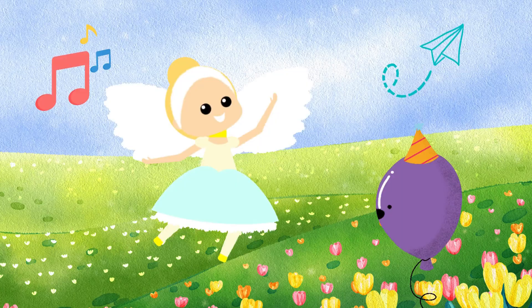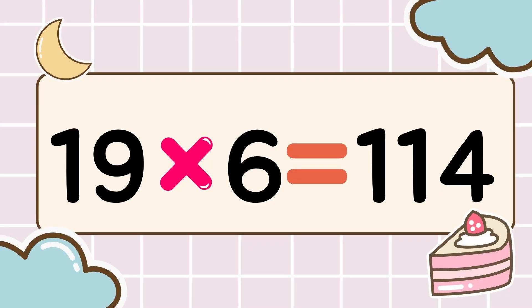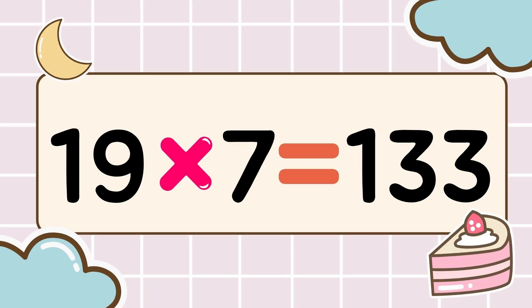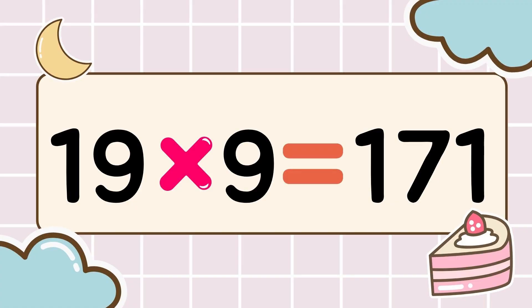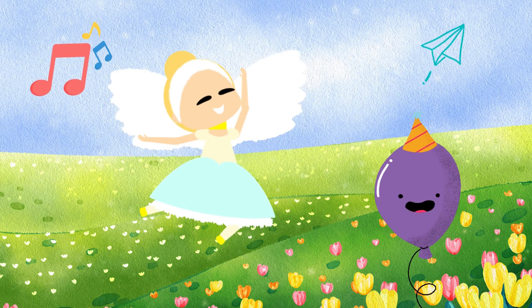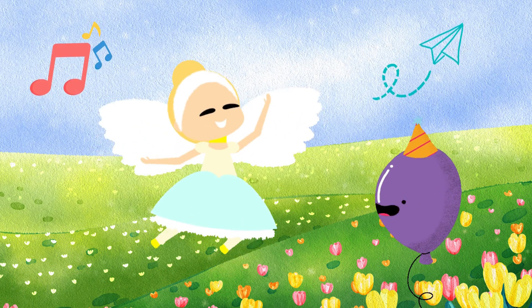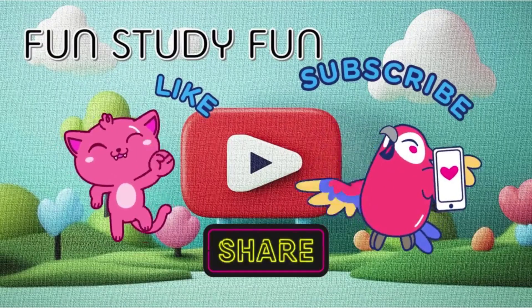Oh no, it's a final level! You have fun, study, fun! 19 times 8 is 152, 19 times 9 is 171. Learning times tables is so fun. We are fun, study fun.